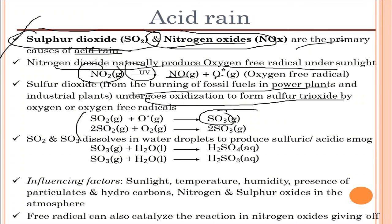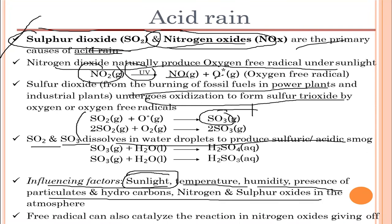Sulfur dioxide and trioxide dissolve in water droplets to form sulfuric acid. Key influencing factors for acid rain formation include sunlight — important for mixing poisonous gases — as well as temperature difference, humidity, presence of particulates, hydrocarbons, and other atmospheric gases. Free radicals can also catalyze reactions with nitrogen oxides, enabling sulfur dioxide or trioxide to dissolve in water droplets to form sulfuric acid.